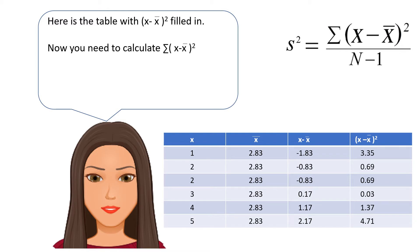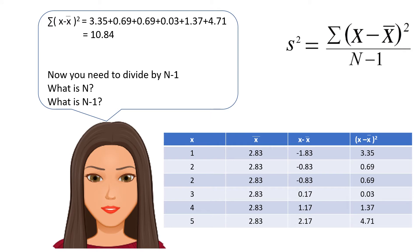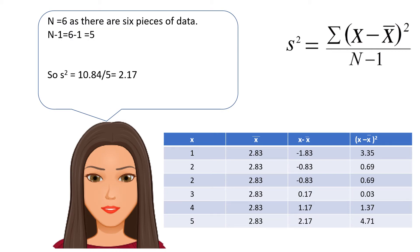Now calculate the sum of X minus X-bar squared by adding up all the figures in the final column: 3.35 plus 0.69 plus 0.69 plus 0.03 plus 1.37 plus 4.71 equals 10.84. Next, divide by N minus 1. N equals 6, so N minus 1 equals 5. Therefore S squared equals 10.84 divided by 5, which equals 2.17.